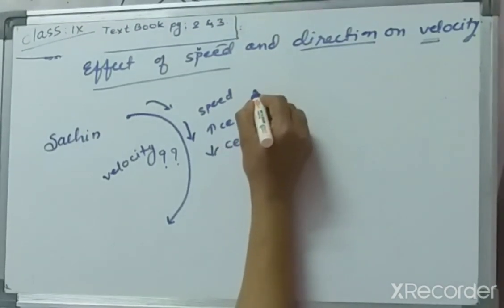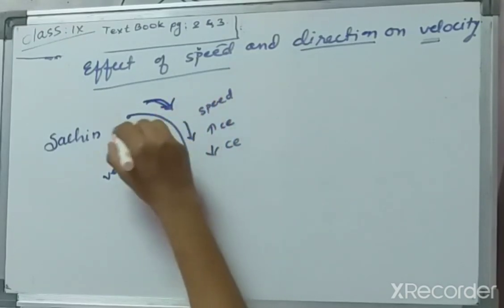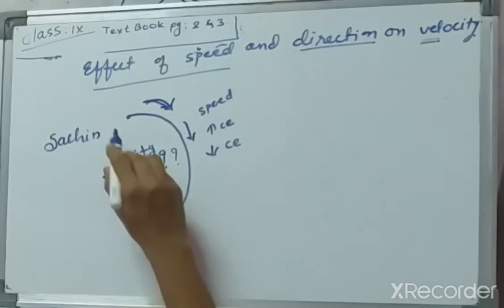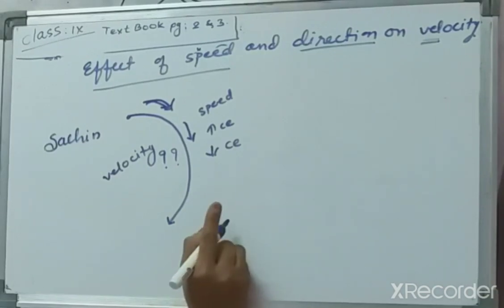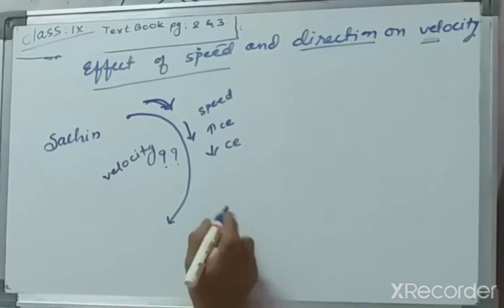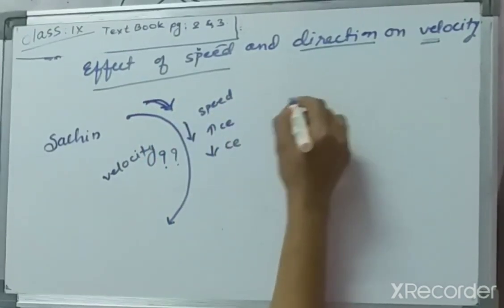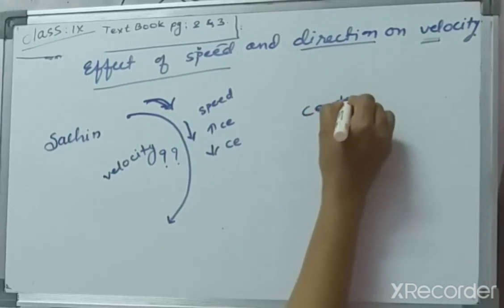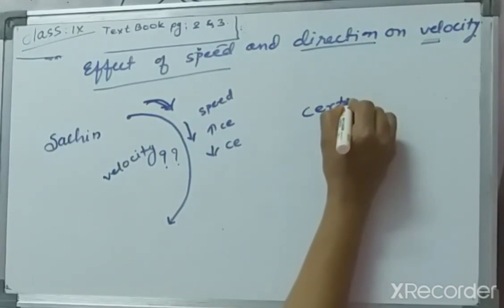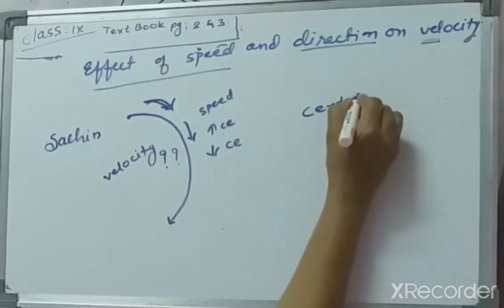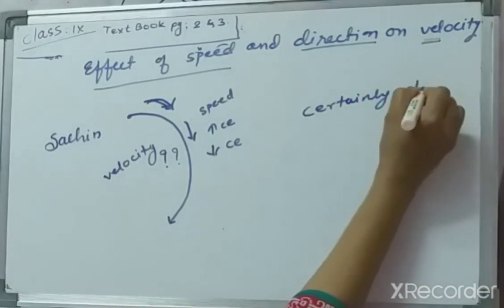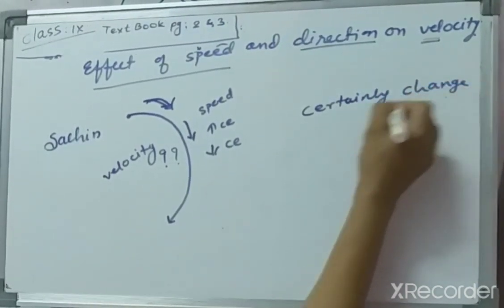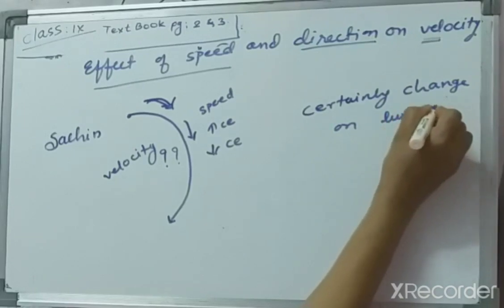If Sachin changes the direction of the motorcycle keeping its speed constant, and the path of Sachin is turning or curved — now remember, students — velocity as well as speed will certainly change on turning. Both velocity and speed will change on turning.